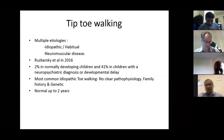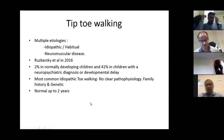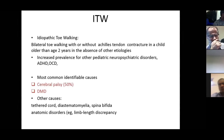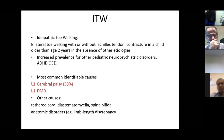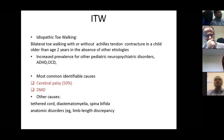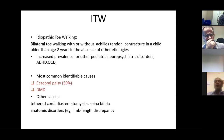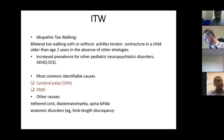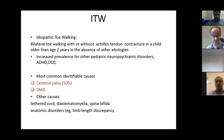The most common is idiopathic toe walking and no clear pathophysiology has been described. There could be associated family history and genetics. Tiptoe walking is normal up to two years of age, so the diagnosis of idiopathic tiptoe walking should be made only over two years of age. It is a bilateral symmetrical condition with or without Achilles tendon contracture in a child older than two years, in the absence of other etiology.